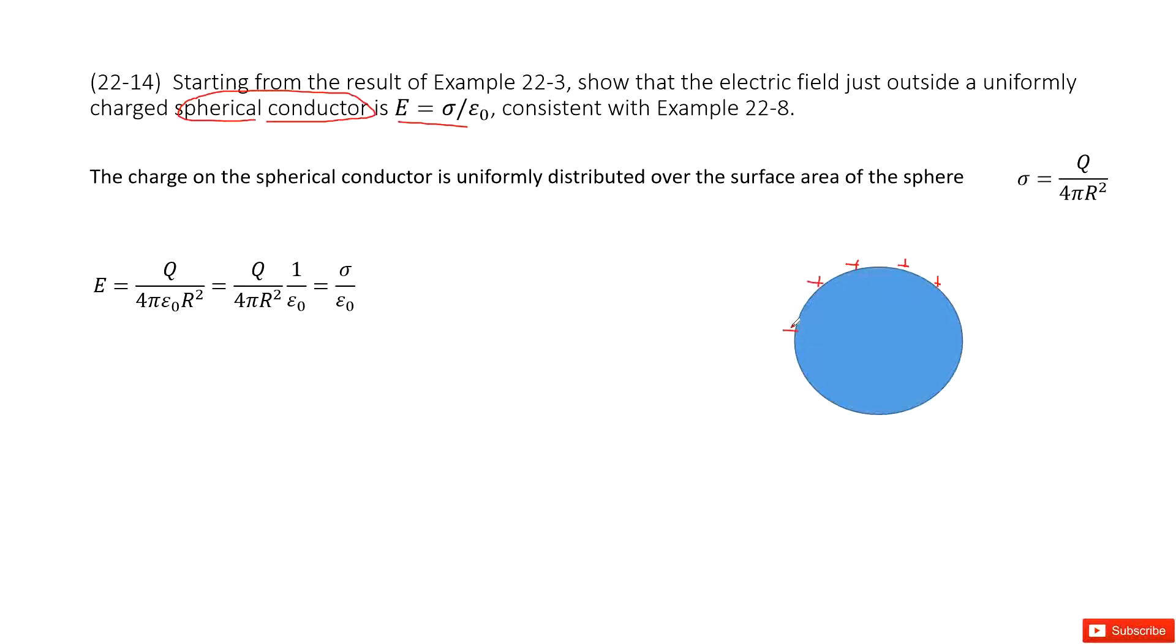And the electric field we need to prove equals this function. So we look at this function. What is σ? This is the charge density, right? The charge density on this surface. So we can consider it as Q, the total charge, divided by the surface, 4πr². Agree?